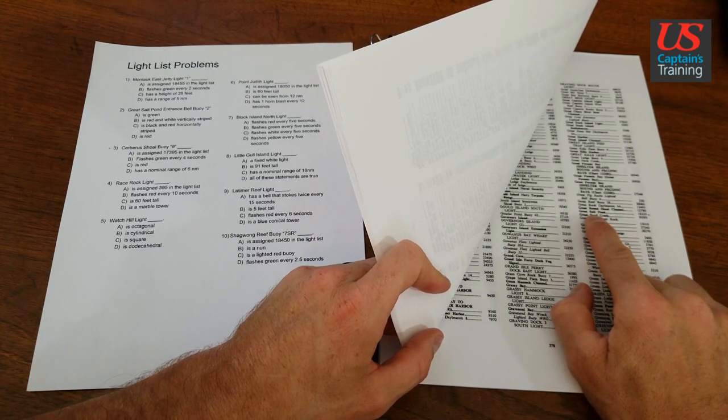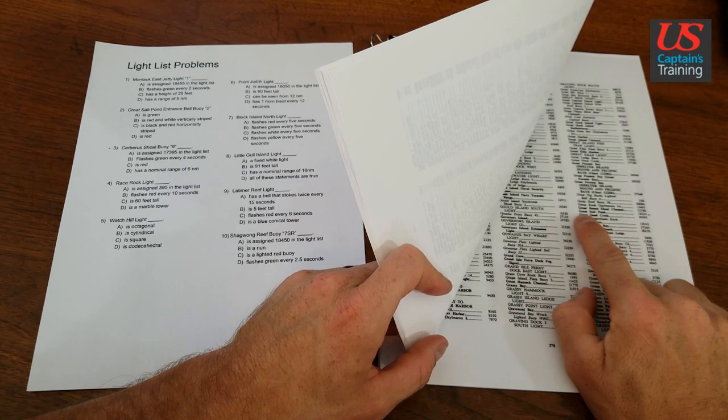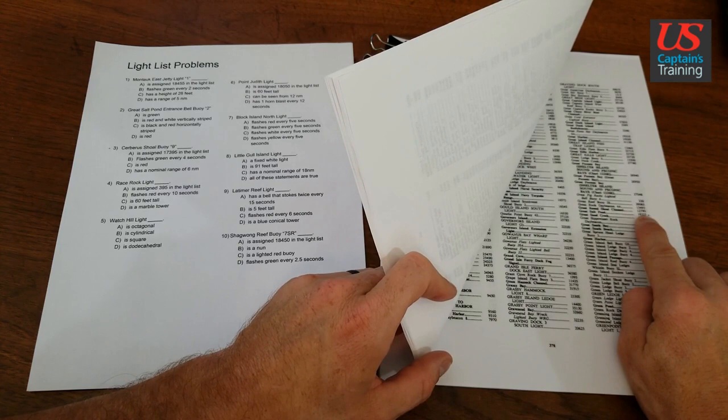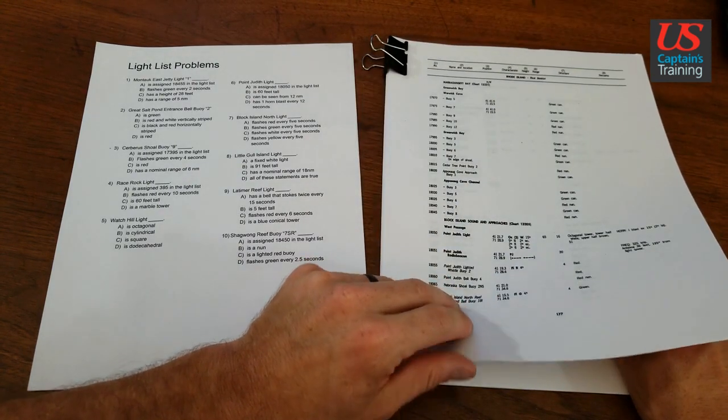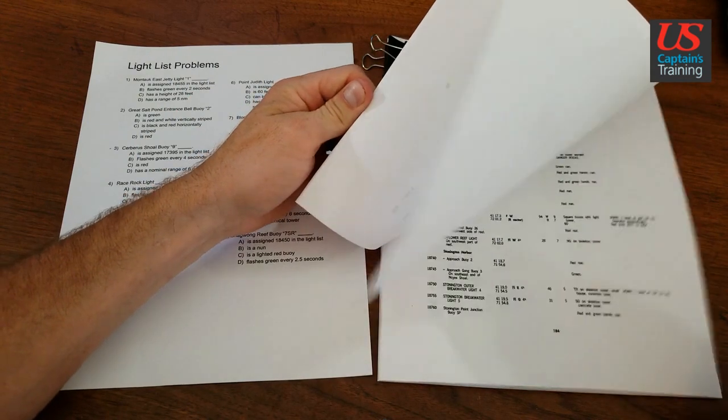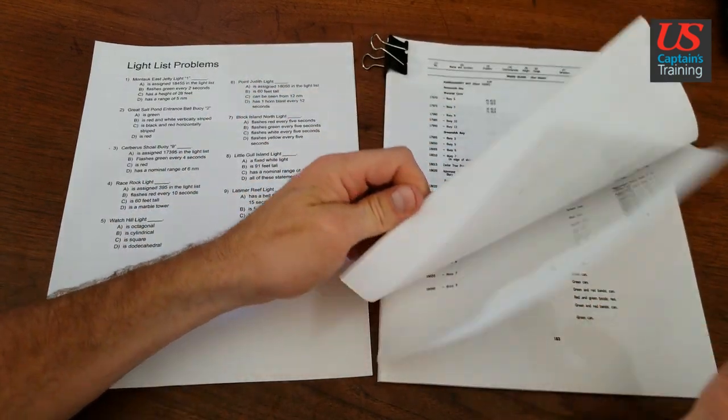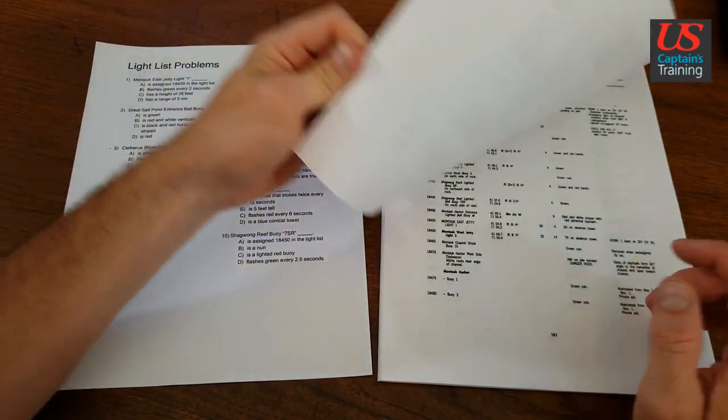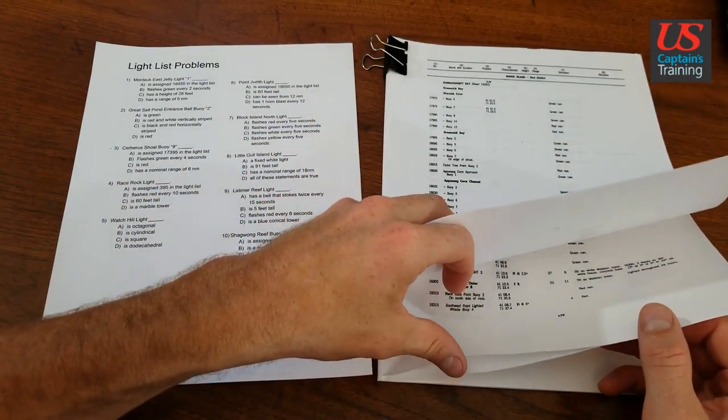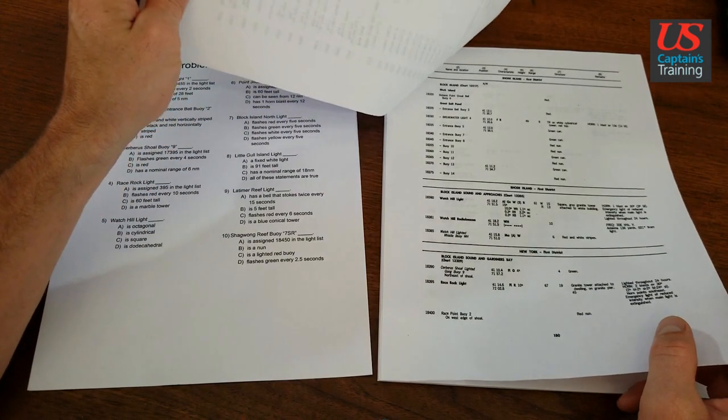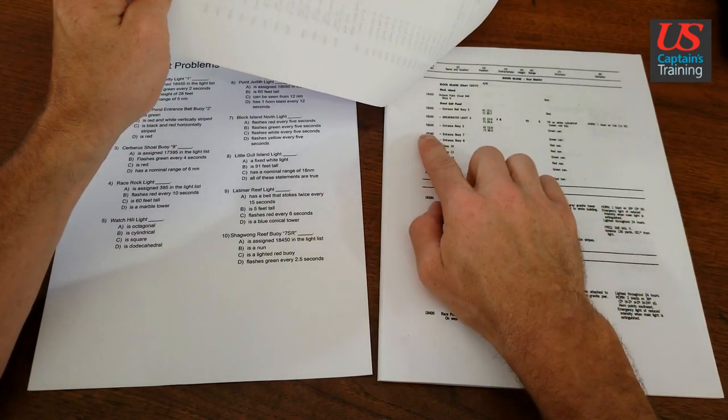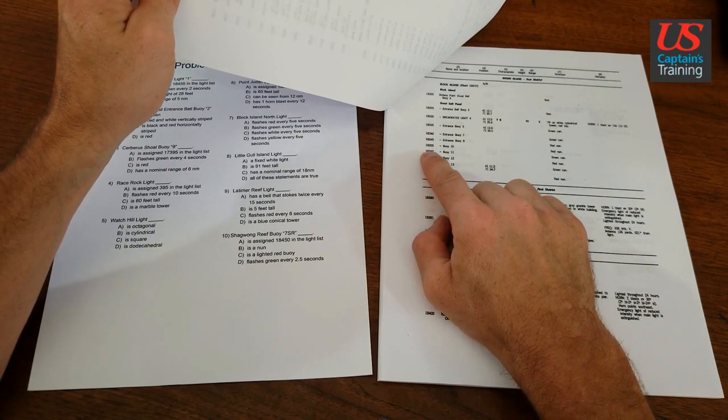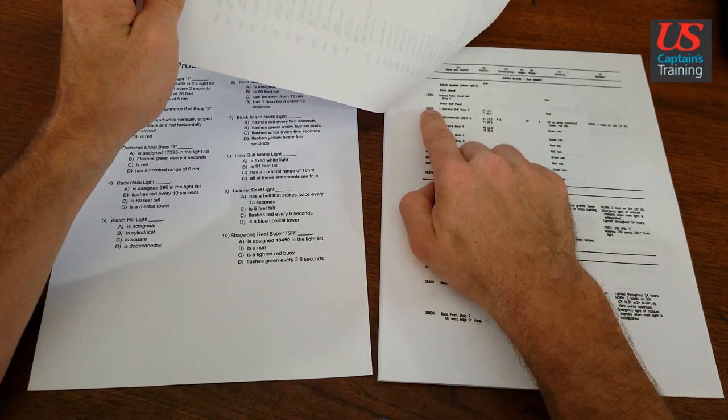Okay I don't see an Entrance Bell Bowie 2, so let's just go with Great Salt Pond, 18,325. So let's look up 18,325 in Column 1. 18,6, further back 18,5, 18,4, 18,4, one more page, there's 18,3, 18,325.